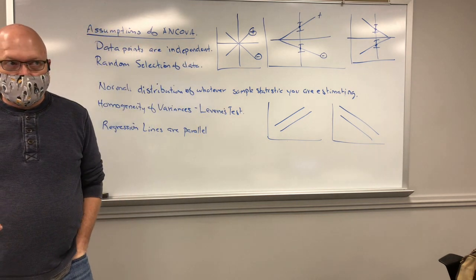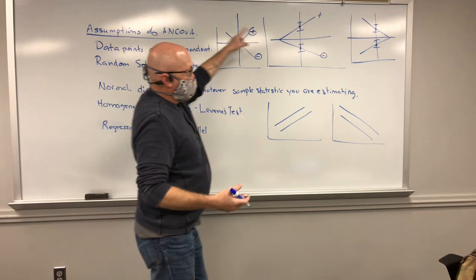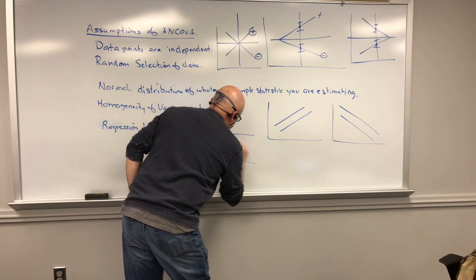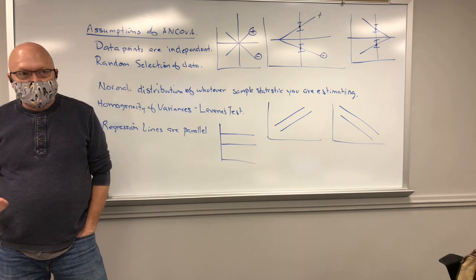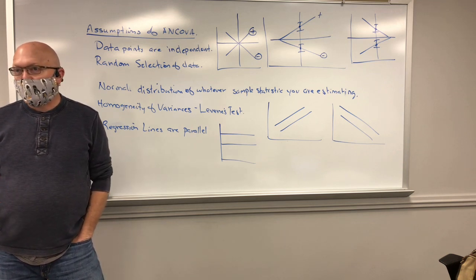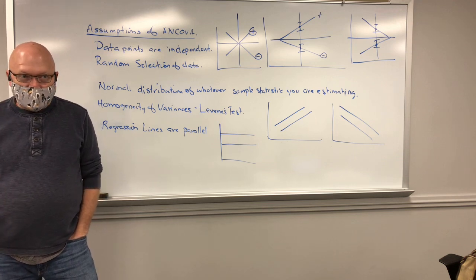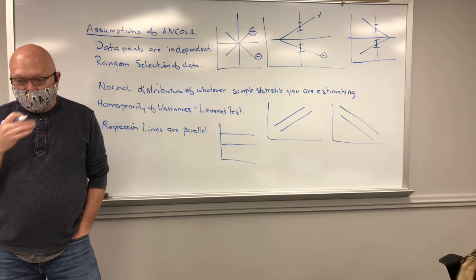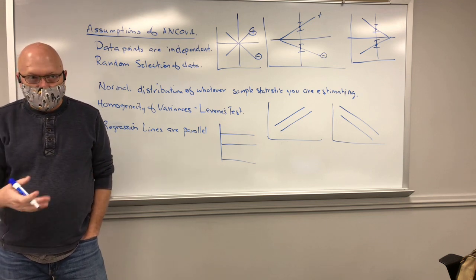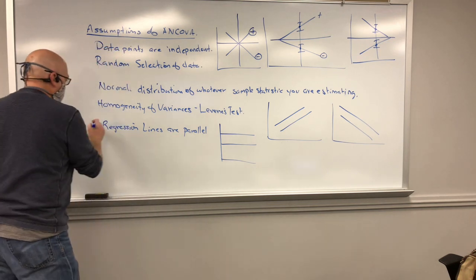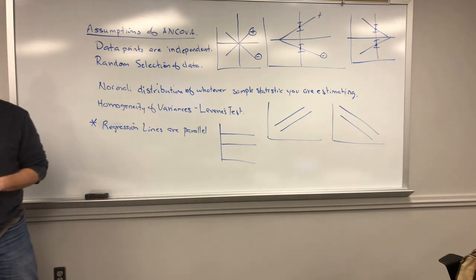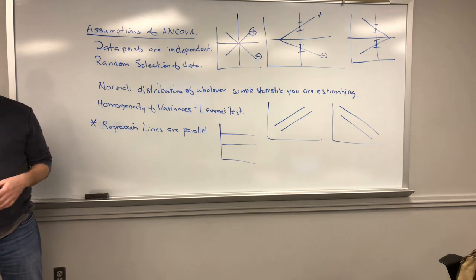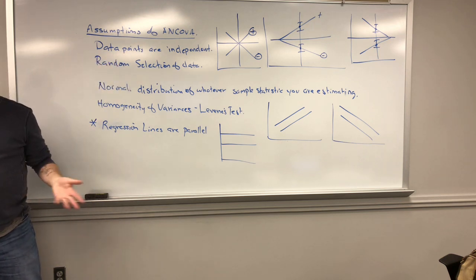You probably wouldn't gain any statistical power by doing an ANCOVA if your lines are not parallel. You would just blow a degree of freedom estimating the common slope, and the adjusted means and unadjusted means would be the same — losing a degree of freedom in the process.